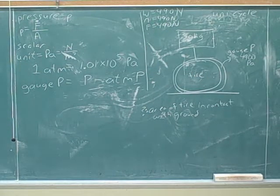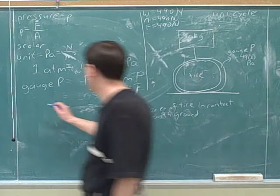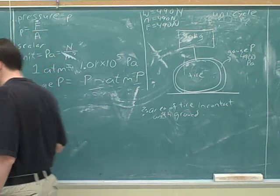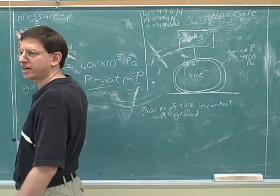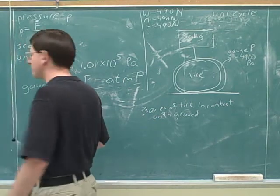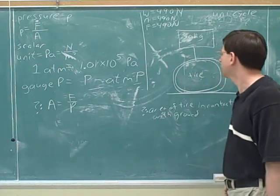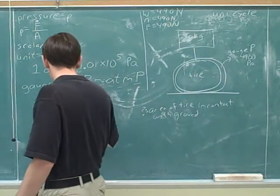Now we're ready to figure out the answer. The question is asking for the area A. We can rearrange the pressure equation to get A equals force over pressure. We plug in 490 Newtons for the force, since that's the force the tire exerts on the ground.